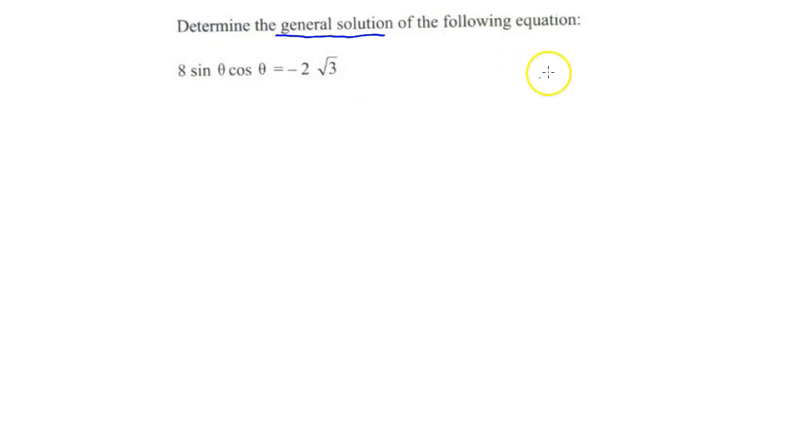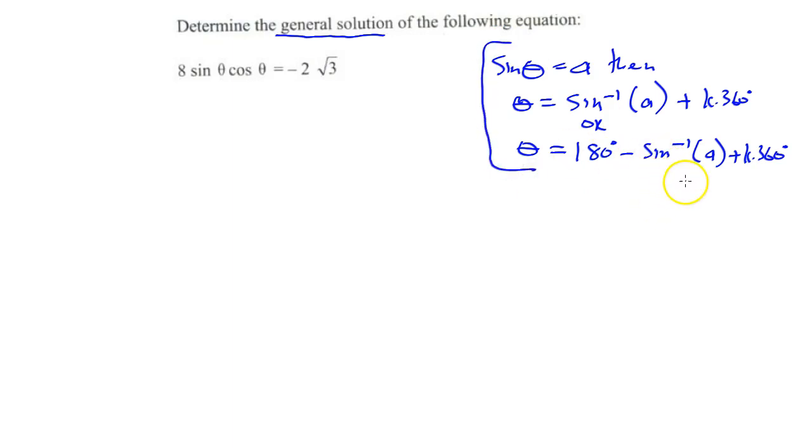For example, let's look at if sin theta is equal to a. Then we're going to be looking at our reference angle: theta equals sin inverse of a plus k dot 360, or theta equals 180 minus sin inverse of a plus k dot 360, because the period of y equals sin x equals 360 degrees.